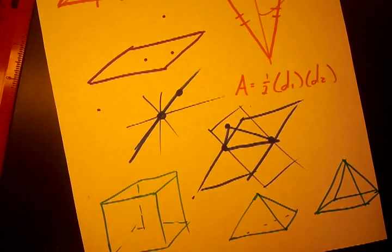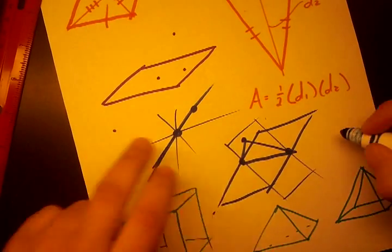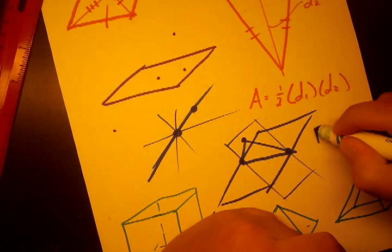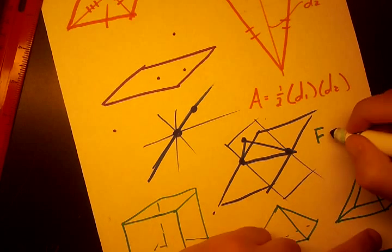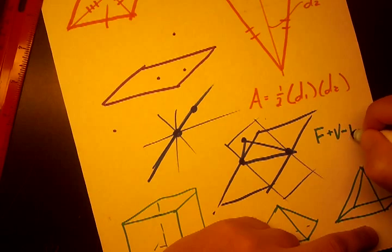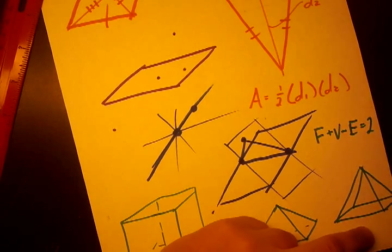And Euler's Formula basically states that when you take your... Let's draw it in here. When you take faces of any shape, plus vertices, minus edges, that gives you the number two. Always.